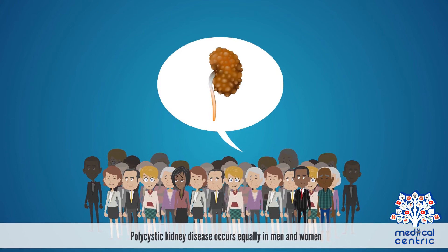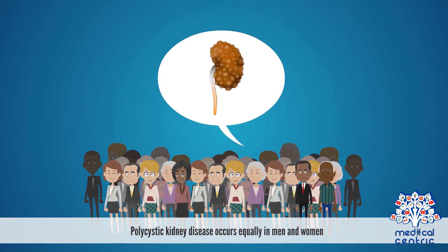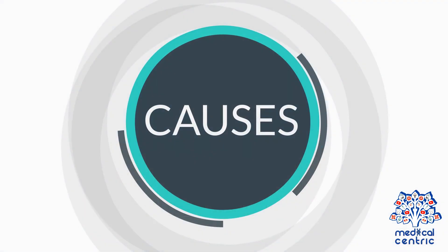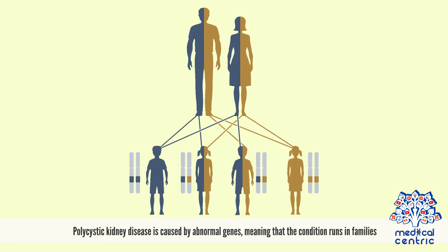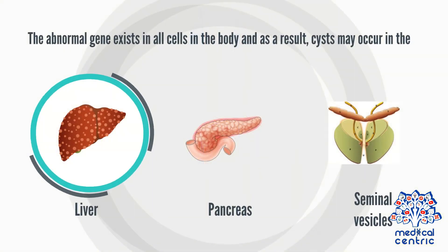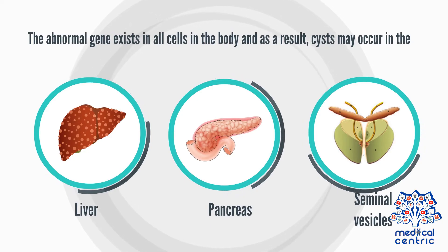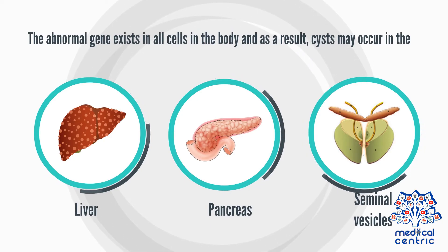Polycystic kidney disease occurs equally in men and women. Polycystic kidney disease is caused by abnormal genes, meaning that the condition runs in families. The abnormal gene exists in all cells in the body, and as a result, cysts may occur in the liver, pancreas, and seminal vesicles.